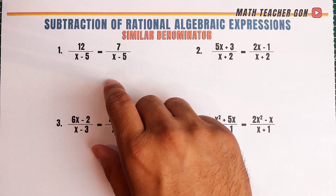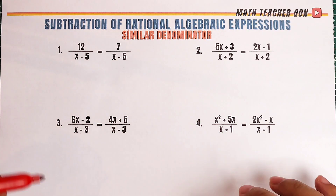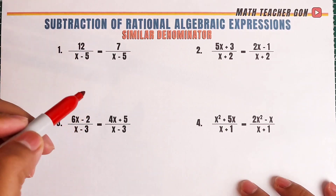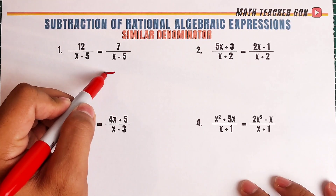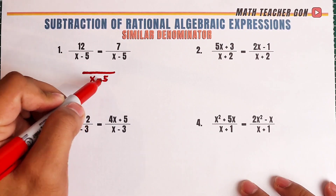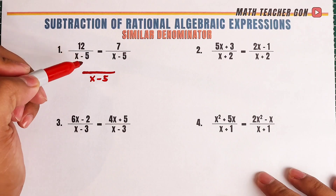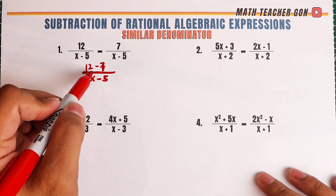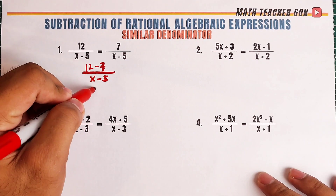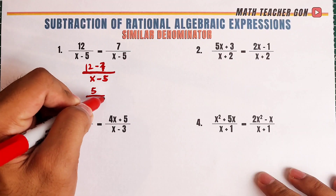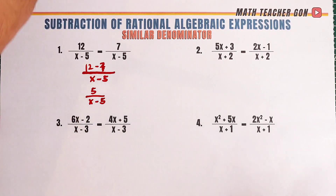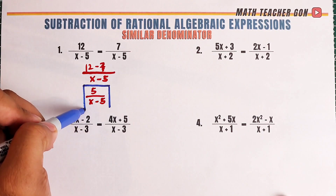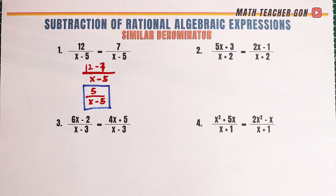Let's start with example number one: 12 over x minus 5, minus 7 over x minus 5. Since the denominators are similar, what we need to do is simply copy the denominator x minus 5 as a single denominator and subtract the numerators. We have 12 minus 7. Simplify the numerator — that would be 5 over x minus 5. Double check if you can still simplify, and for this time it's already simplified. So the correct answer is 5 over x minus 5.